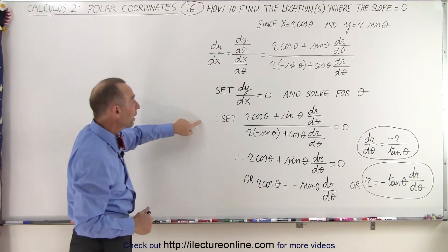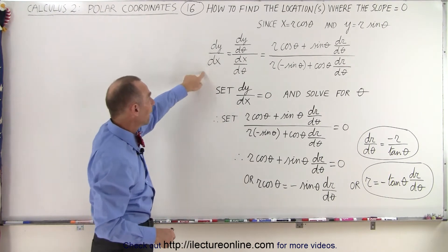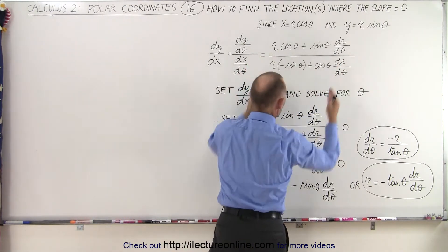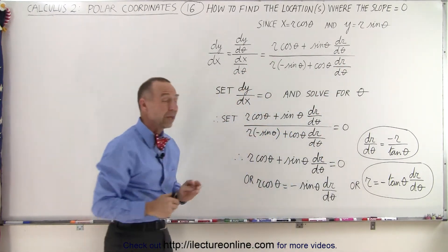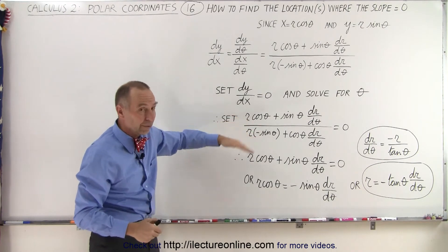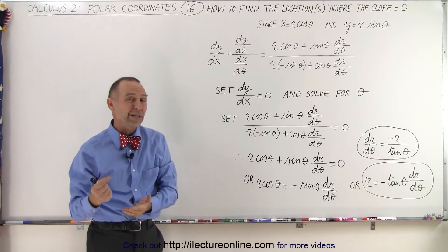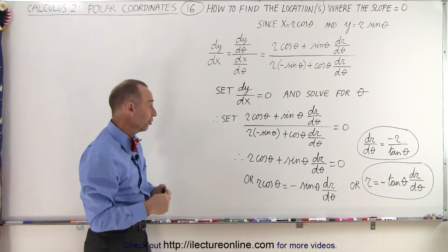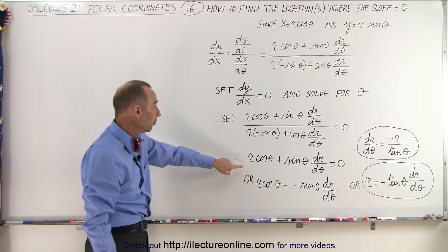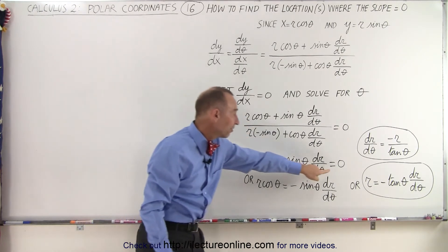So what we're going to do then is set dy/dx equal to zero by taking this expression and setting it equal to zero. Now since it's a fraction, if a fraction is equal to zero, that means the numerator must be zero. So we only have to worry about the numerator. Now we just take the numerator and set it equal to zero.